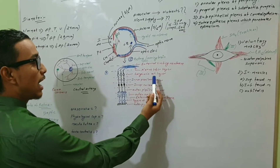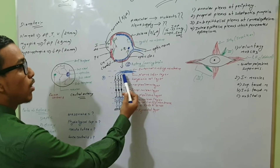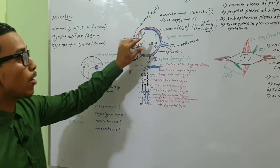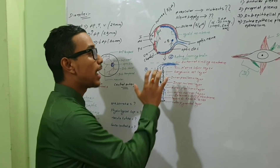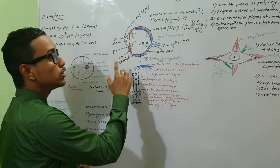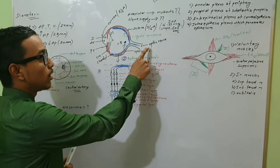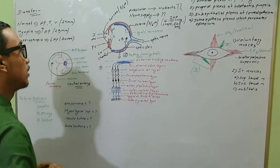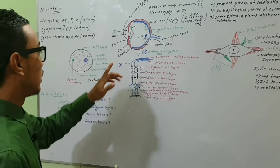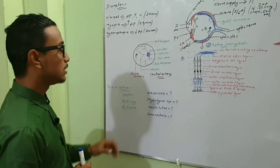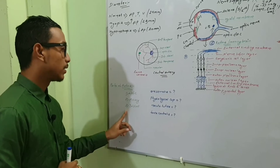Continuing inward, there is the ganglionic cell layer, which gives rise to nerve fibers. These nerve fibers combine to form the optic nerve, which lies in the posterior part of the retina. Opposite to the entrance of this optic nerve lies the optic disc. The parts of the retina are the optic part, ciliary part, and iridial part.